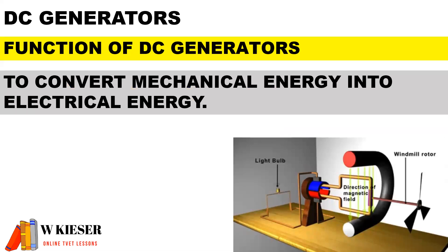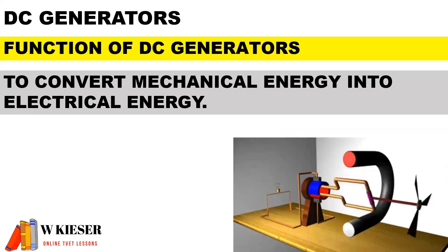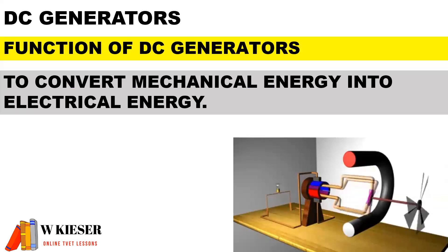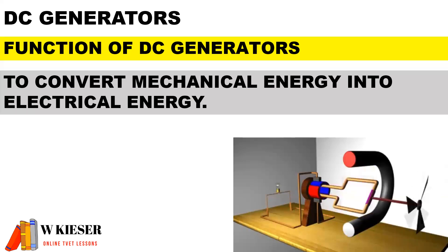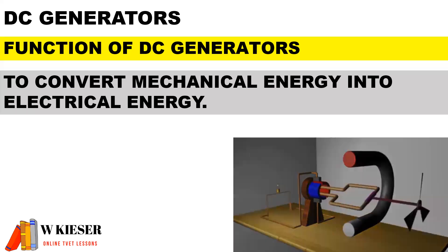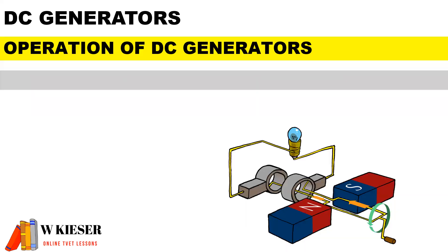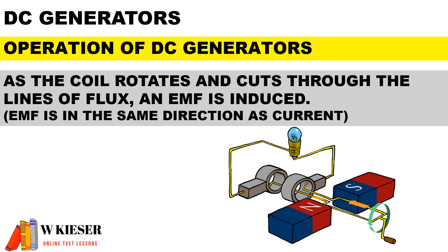For DC generators, the function is to convert mechanical energy into electrical energy. In terms of operation, as the coil rotates and cuts through the lines of flux, an EMF is induced. For generators, the EMF is in the same direction as the current flow.